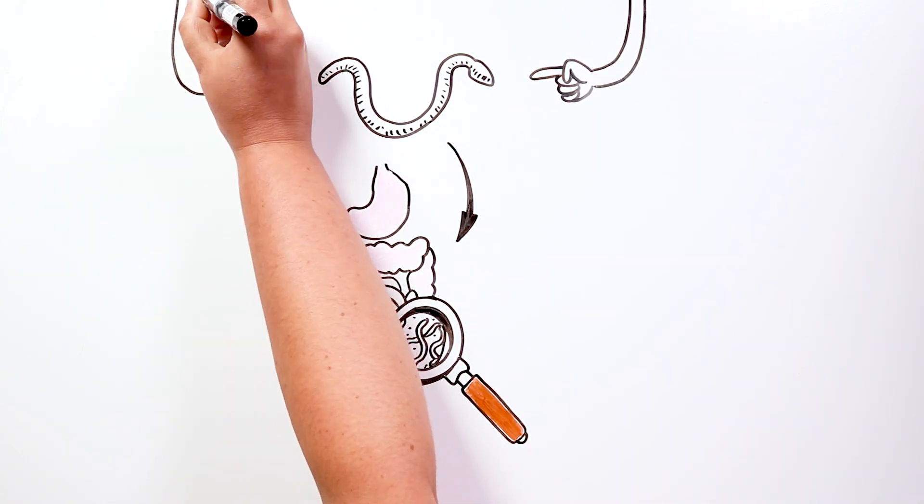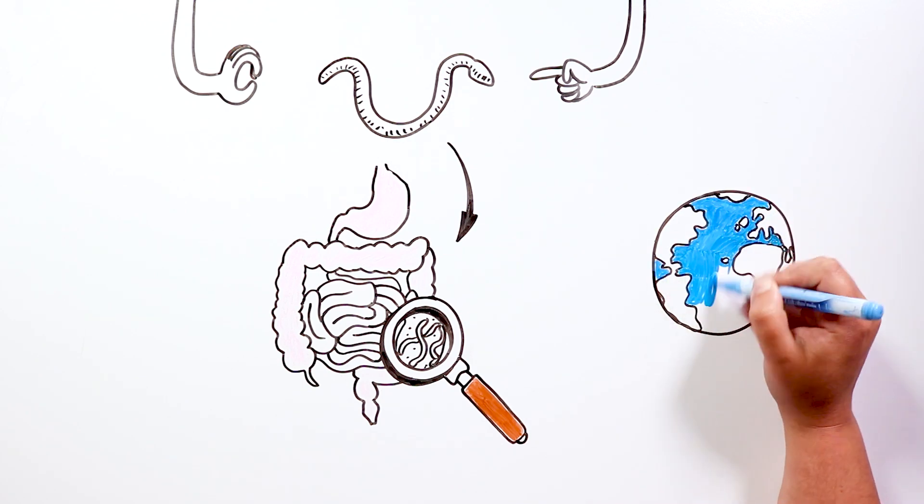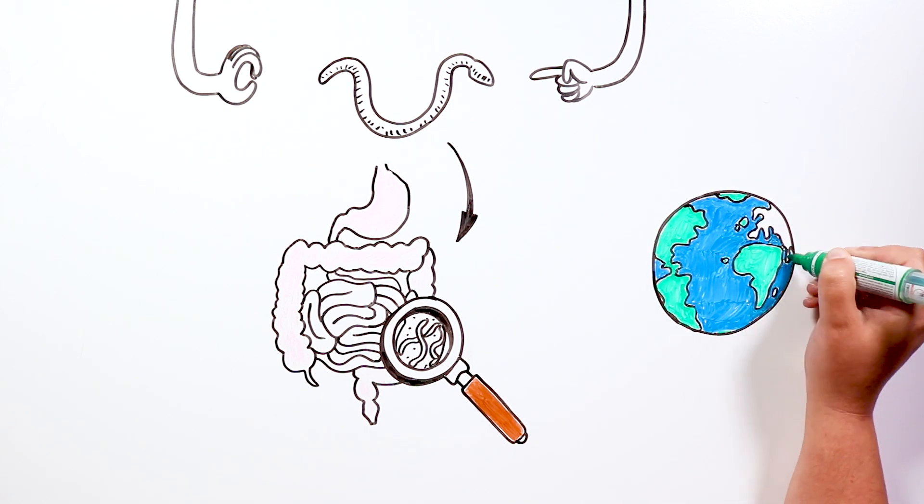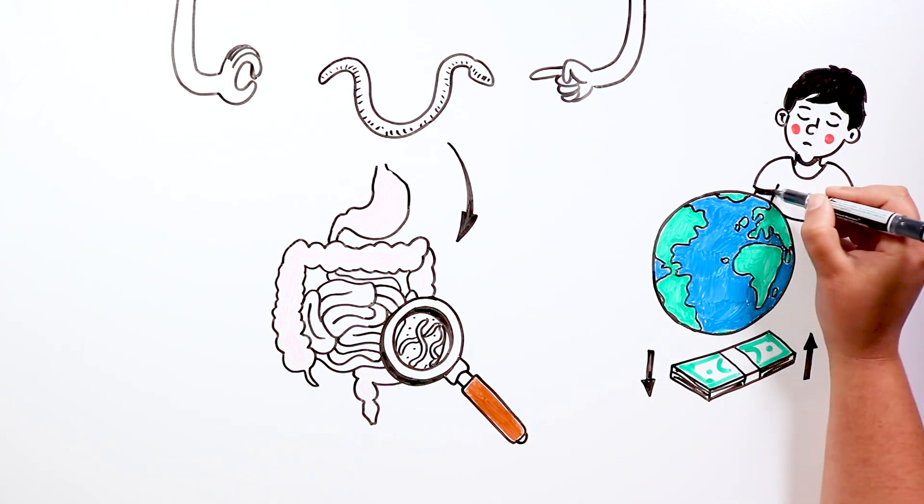Pinworms are small, slender, rounded, whitish worms. It is a relatively common infection throughout the world, affecting people of all ages and socio-economic levels, although it is more common in school-age children.